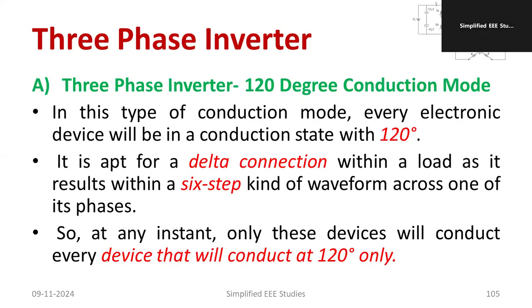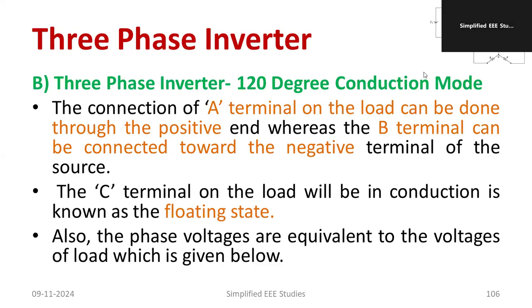In 120-degree conduction, every electronic device will be in the conduction state for 120 degrees. It is suitable for delta connections. The result is six-step waveforms, so harmonics will be minimal. Every device conducts at 120 degrees — that is the speciality of 120-degree conduction. In this mode, terminal A on the load is connected to positive, while terminal B is connected to negative.